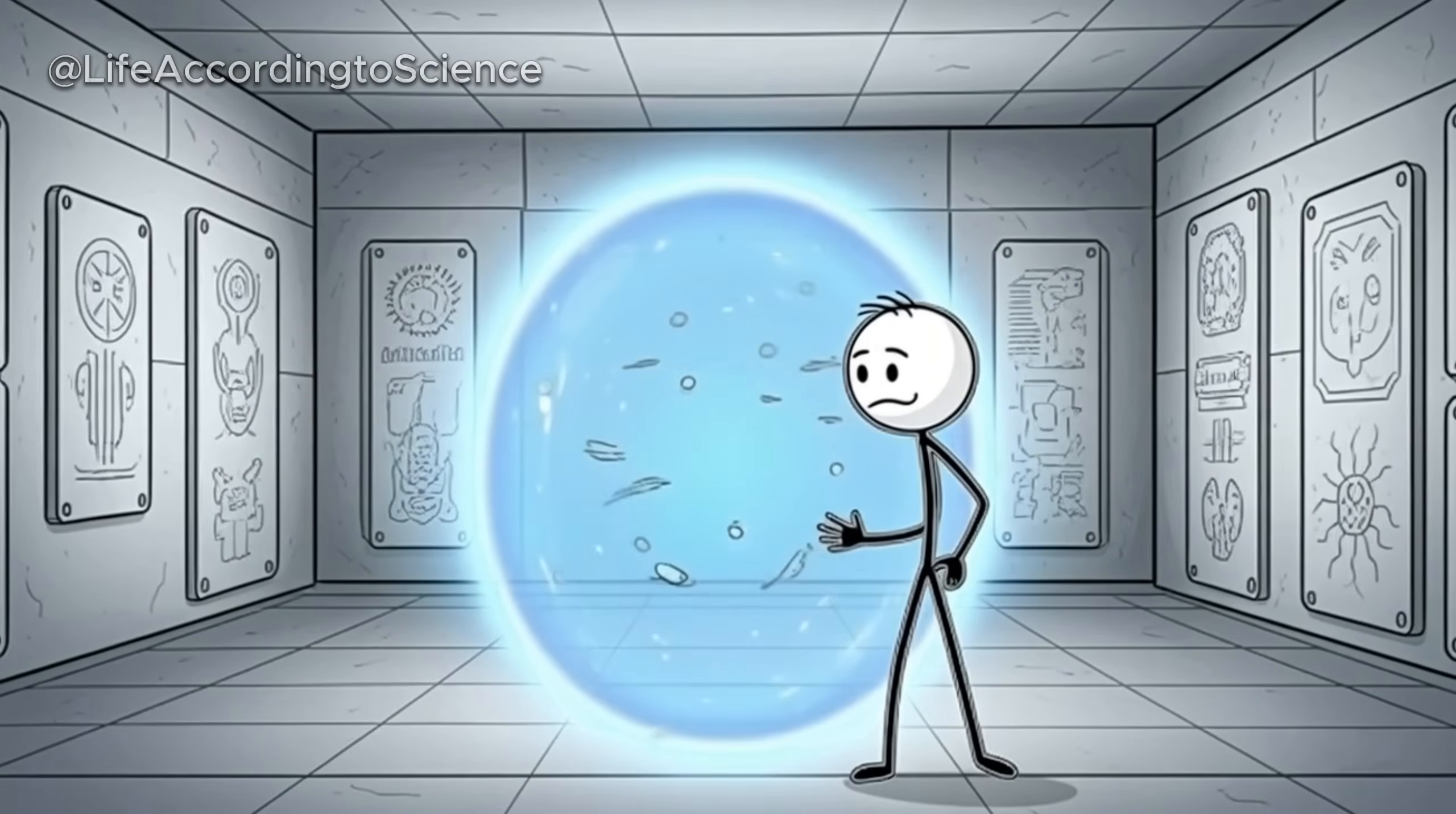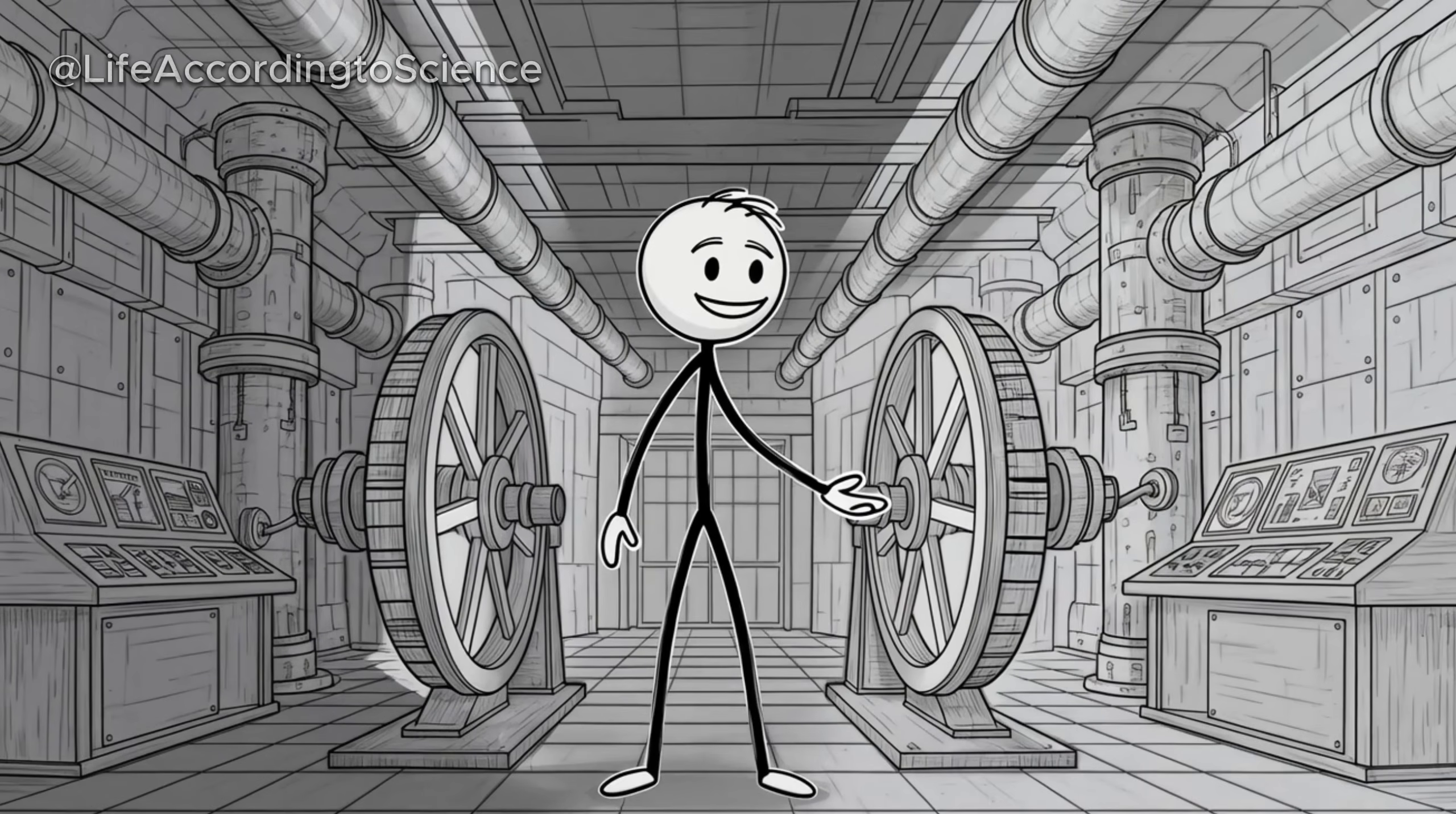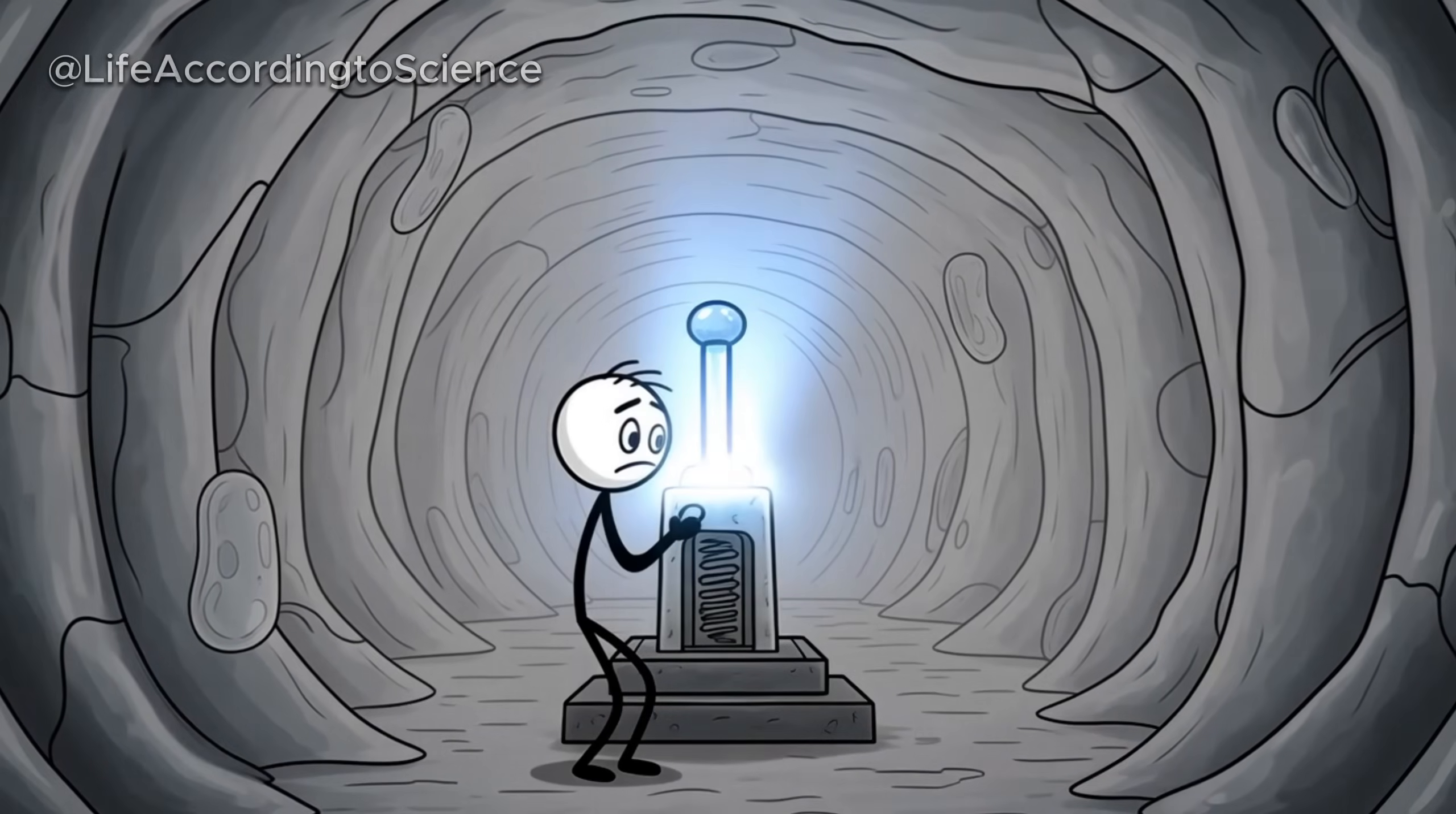But here's where it gets really interesting. Your body's goal isn't to punish you for not eating, it's to protect you. Evolution designed humans to survive famine, and your metabolism is the control center that decides how to spend or save energy when food disappears.